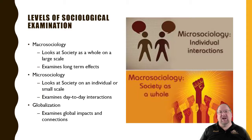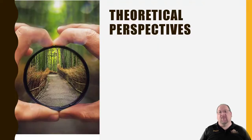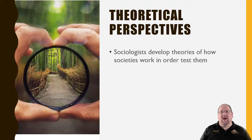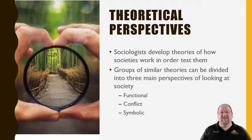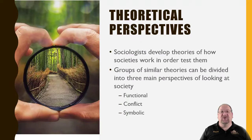And finally, understanding globalization — how these little things can affect things on a global scale. There are a number of theoretical perspectives that sociologists develop to test how society works, looking at how groups are similar or different from one another scientifically, and what works or doesn't work in groups. We use three particular perspectives: the functionalist perspective, the conflict perspective, and the symbolic interactionist perspective — three different ways to view what's going on.